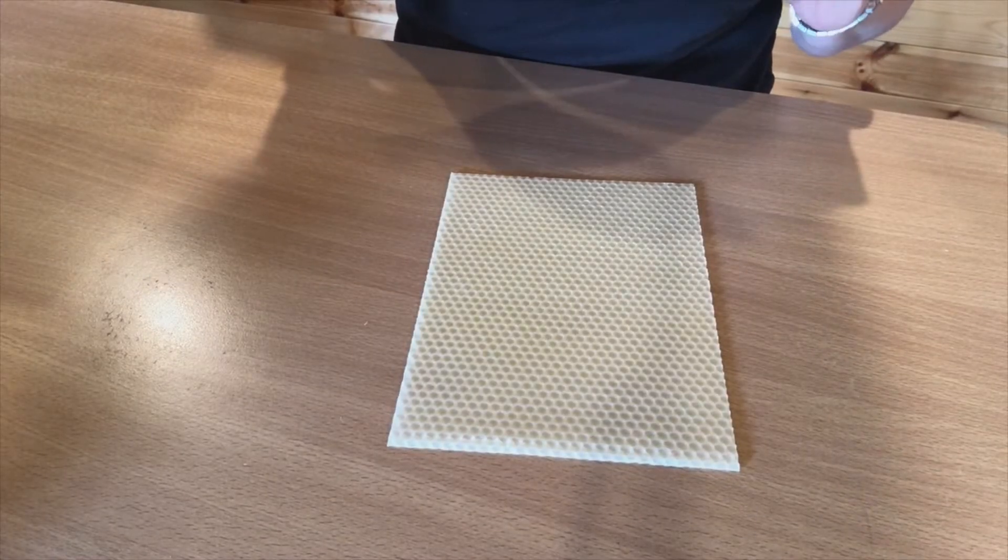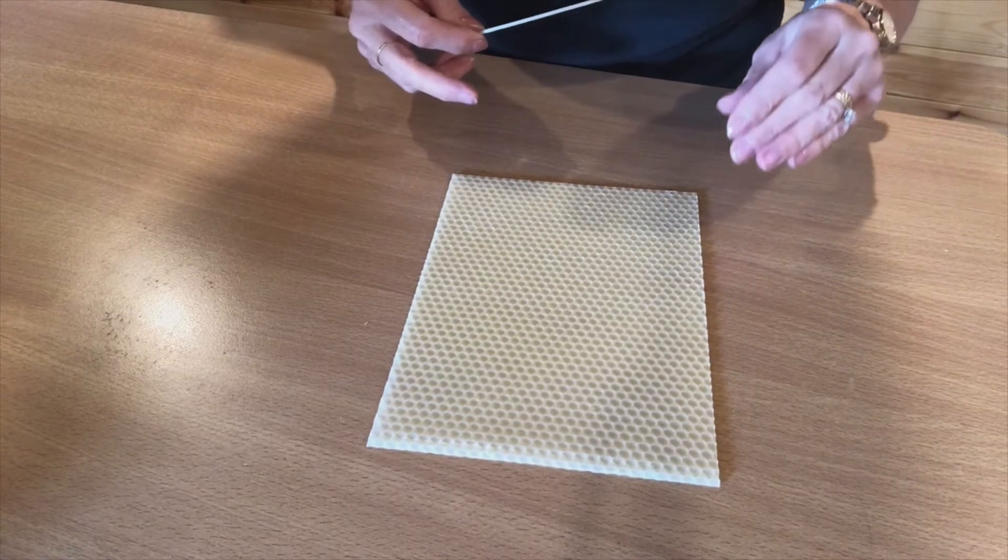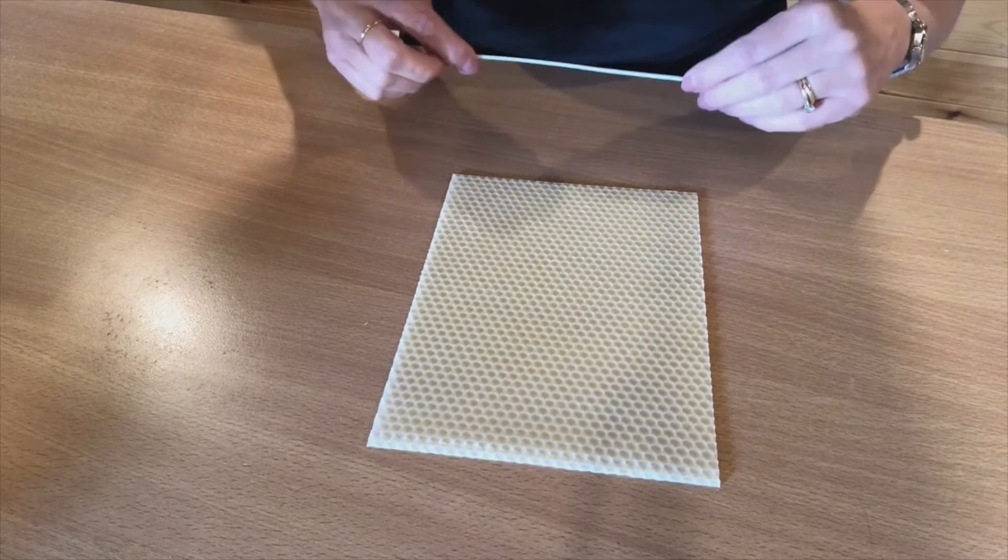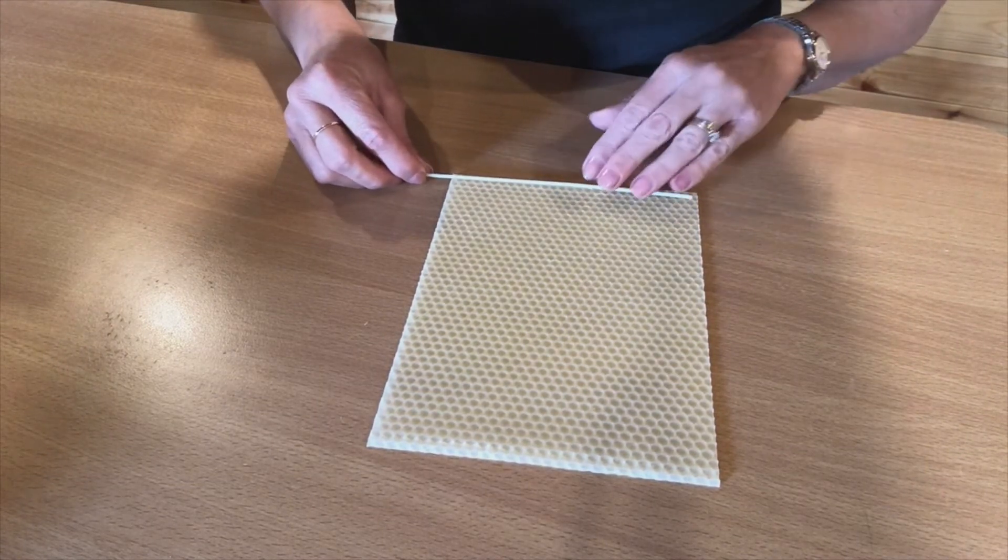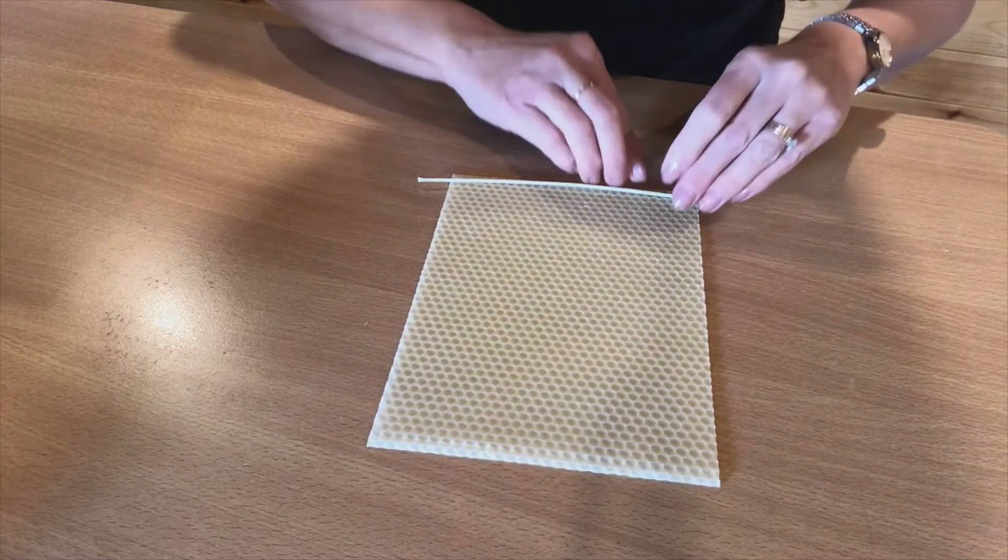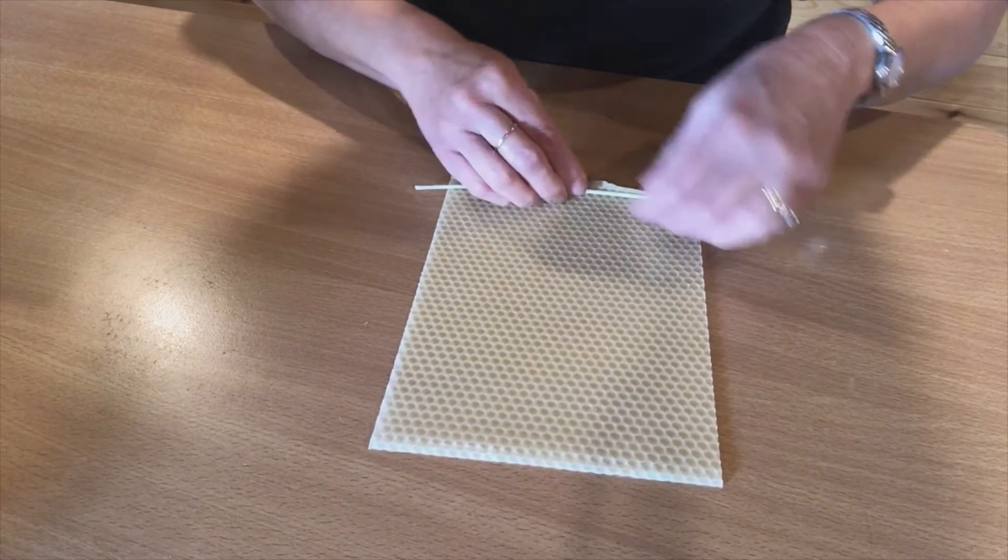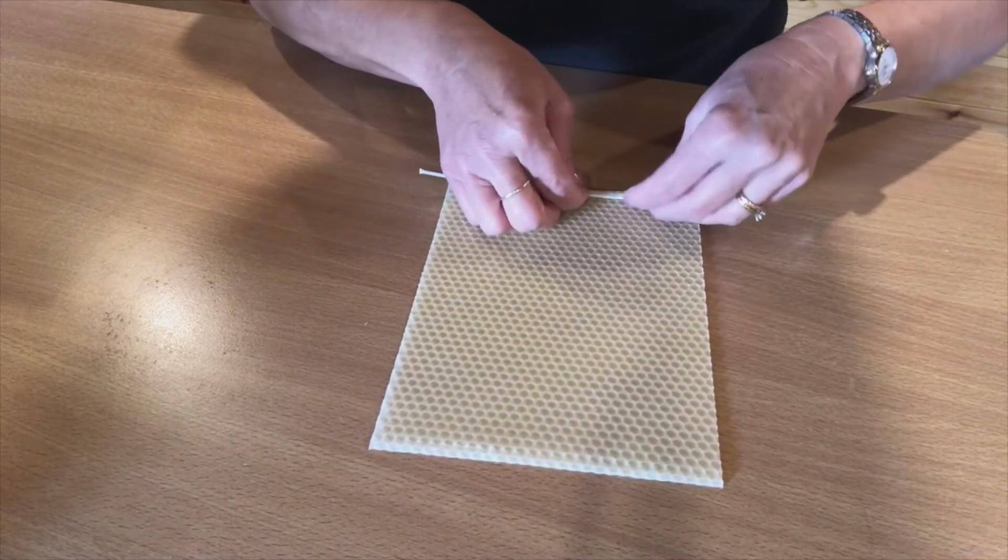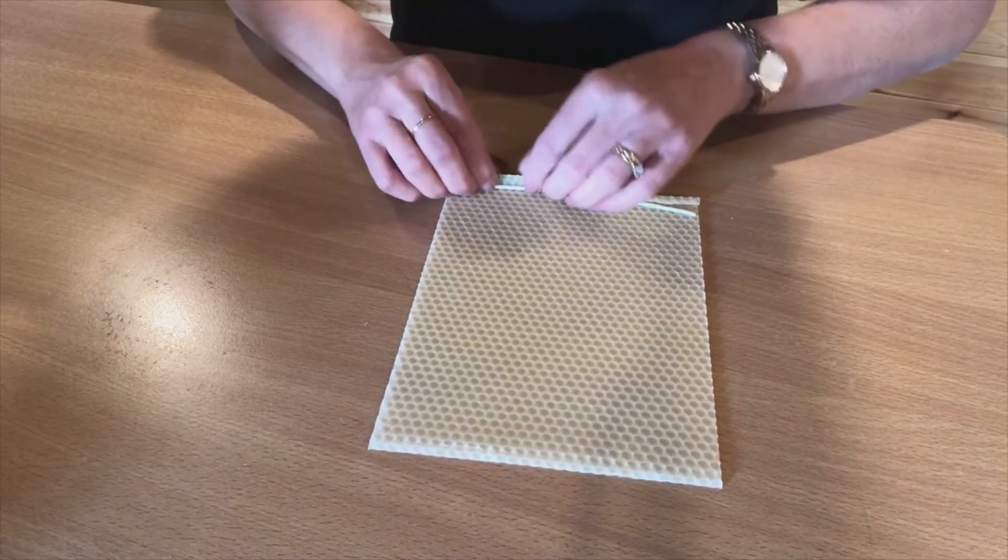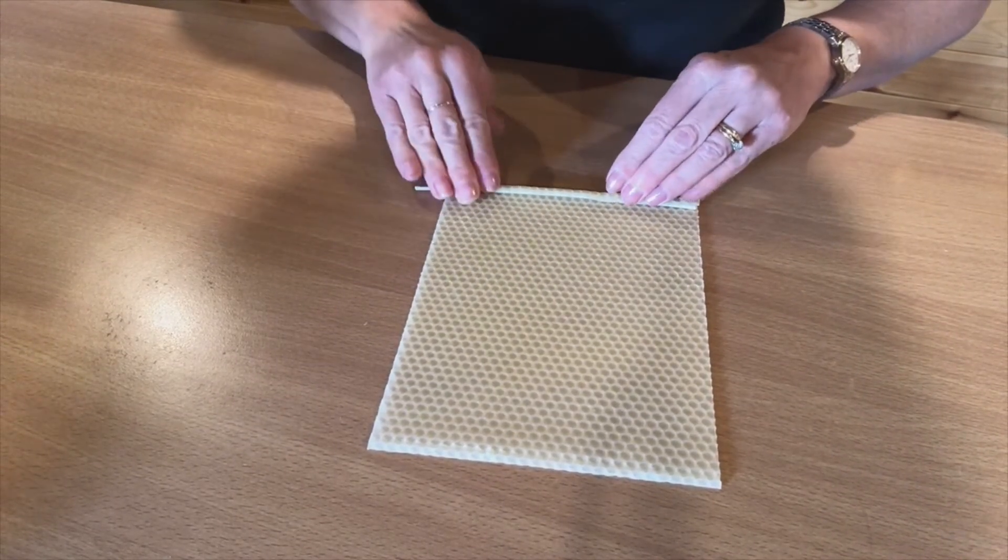The first candle we're going to make is a straight candle. Take one of your beeswax sheets, you have a choice of three different colors. Place the wick about half a centimeter along the edge. Then roll over initially, it's more of a roll than a fold, to cover the wick. Continue all the way to the end of the sheet, trapping the wick.